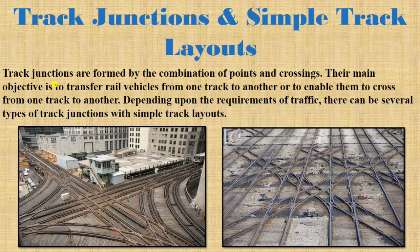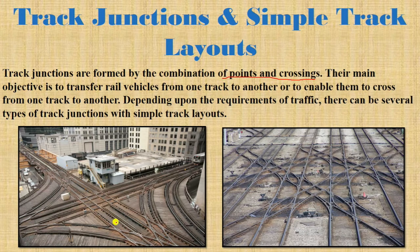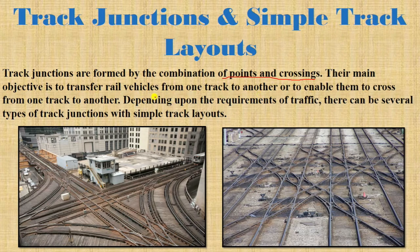Track junctions are formed by the combination of points and crossings. Their main objective is to transfer rail vehicles from one track to another and to enable them to cross from one track to another.